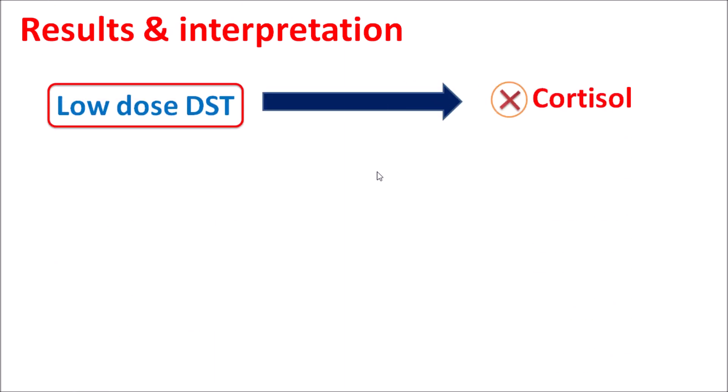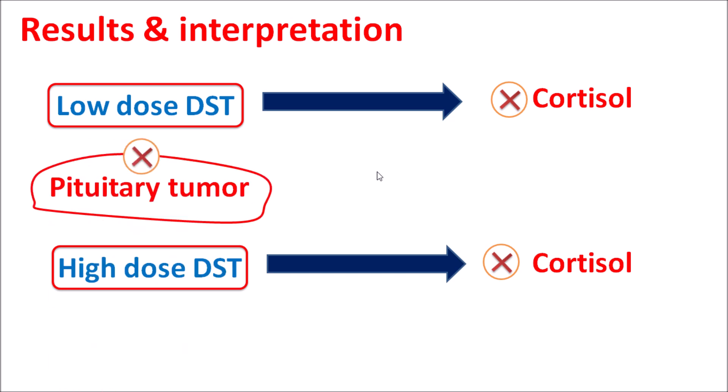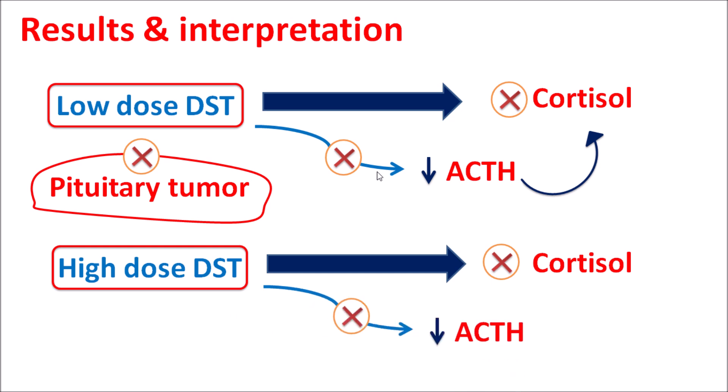If at low dose we cannot observe any suppression of cortisol, and even at high dose we cannot observe any suppression of cortisol, this indicates that elevated cortisol is not due to pituitary tumors. Because at low dose dexamethasone cannot suppress ACTH, and even at high dose ACTH levels are not reduced and cortisol is not suppressed, this indicates that elevated cortisol is due to another reason such as adrenal tumors. In this way, the dexamethasone suppression test can differentiate Cushing disease caused by pituitary tumors from other disorders associated with elevated cortisol.